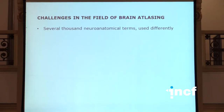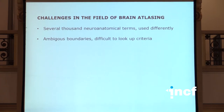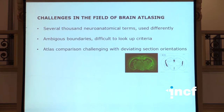The challenges we face are that we have a large number of neuroanatomical terms that are differently used by different researchers. The boundaries of these regions are ambiguous, and if you look up in an atlas it is extremely difficult to trace back the criteria used to draw the boundary, whether a line, dotted line, or otherwise. And of course there are differences in orientation — if your experimental material has a different orientation than the standard plane of the atlas, you very soon run into problems.